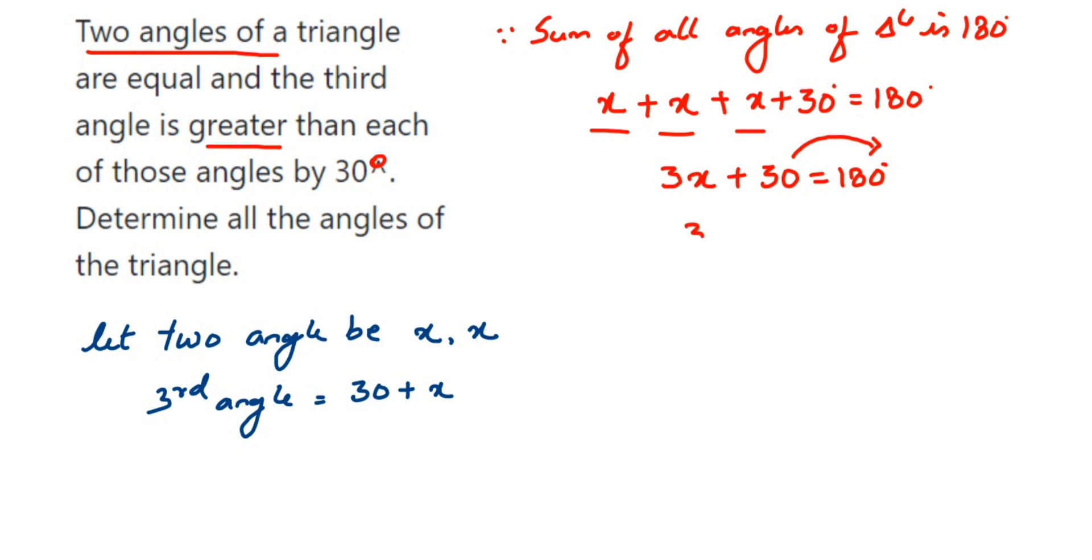Which is 150, so 3x equals 150. Now we want the x value. We're going to transpose 3. Like 3 is multiplication with x, it's 3 into x, so when you transfer it, it comes in division.